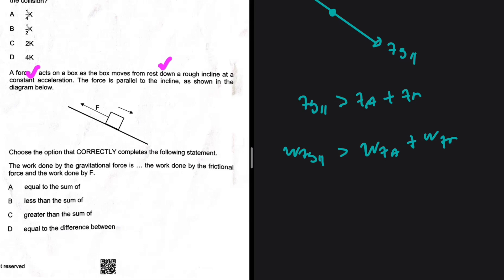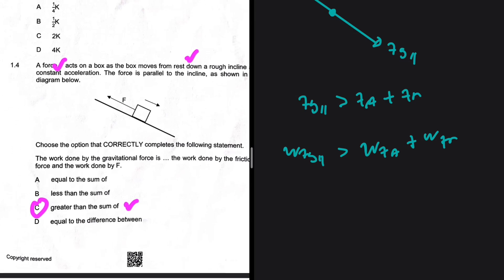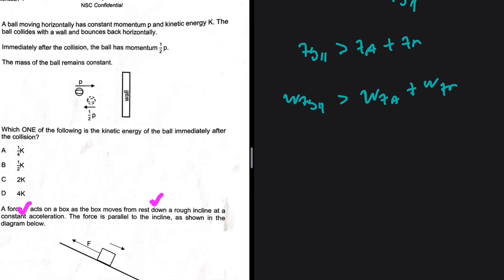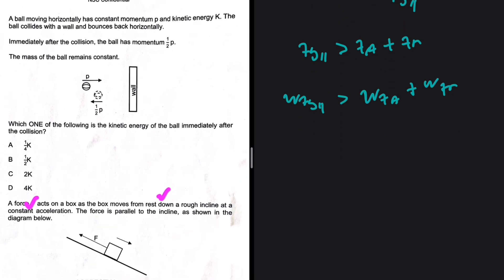The work done by the gravitational force is greater than the sum of the work done by the frictional force and the work done by force F. That is option C — the answer to 1.4.